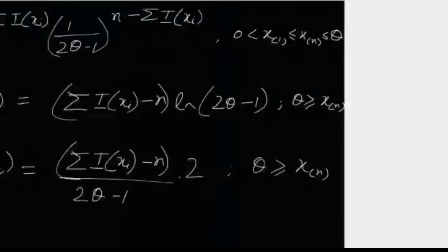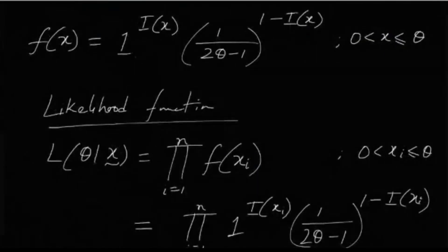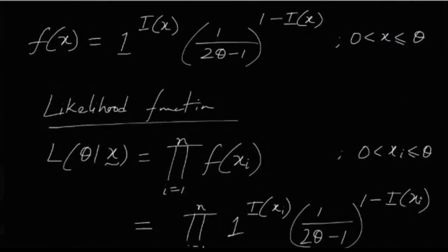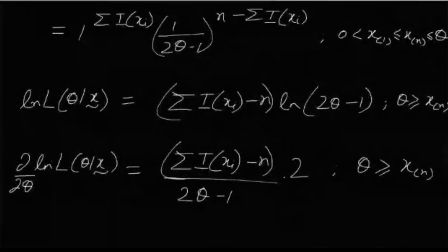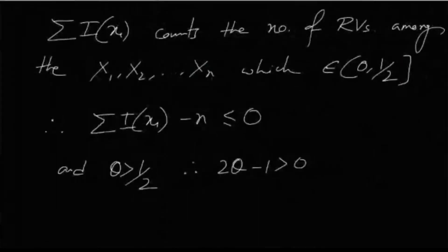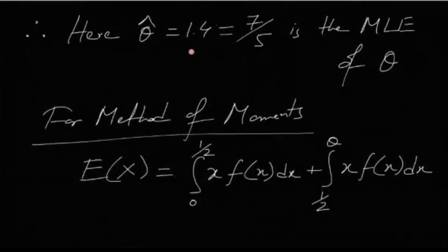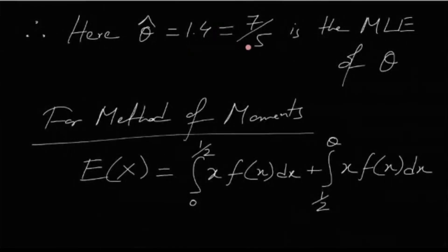For the given six observed values, the highest value is 1.4. So 1.4 is the MLE of theta, which equals 7/5.